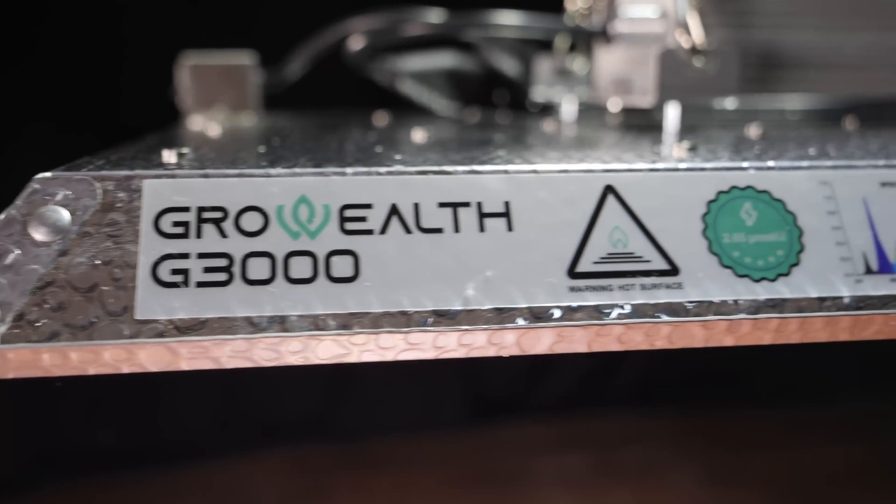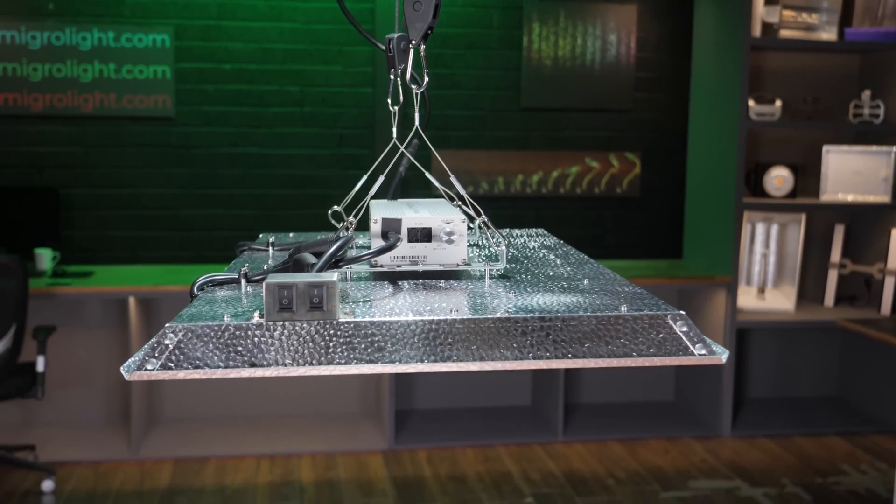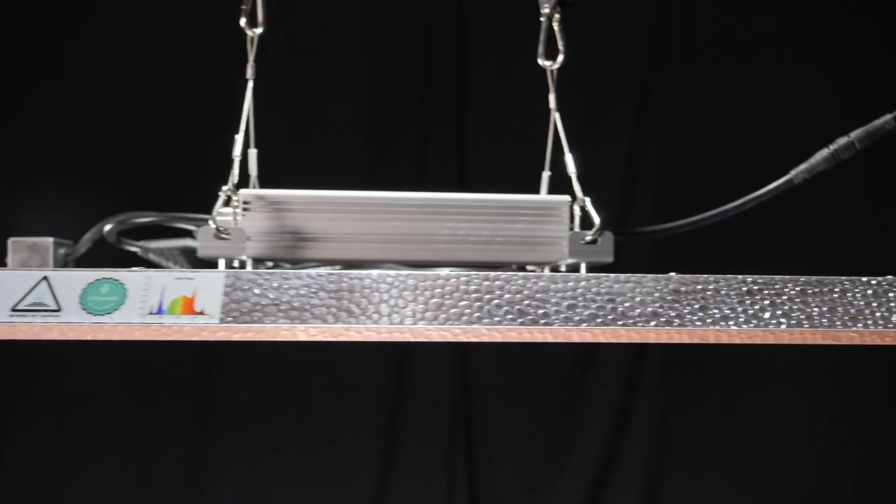Hey there guys, I've got a new light here from GrowWelt called the G3000. As the name suggests, it's a 300 watt light and it's best suited for a 3 foot by 3 foot or 90 centimeter by 90 centimeter grow area.